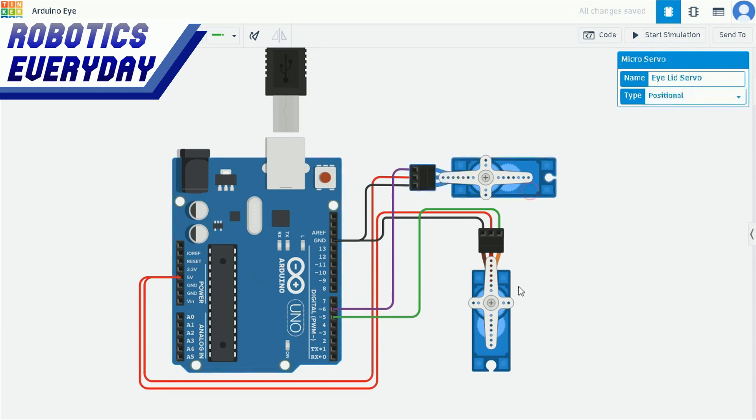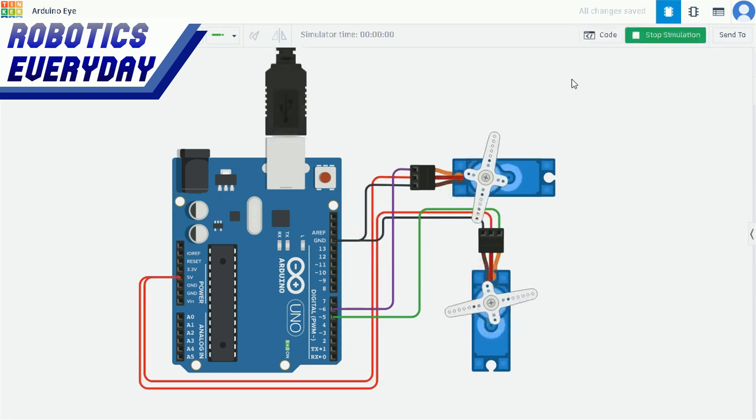The schematic of the robotic eye setup showcases the connections and circuitry involved. It features an Arduino Uno and two servo motors that are linked to it. This schematic illustrates the configuration of the components and how they are interconnected to form the robotic eye.